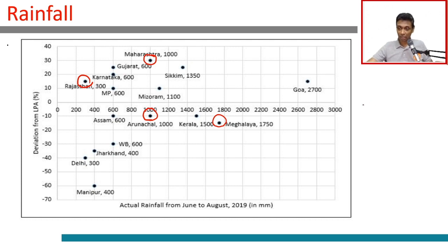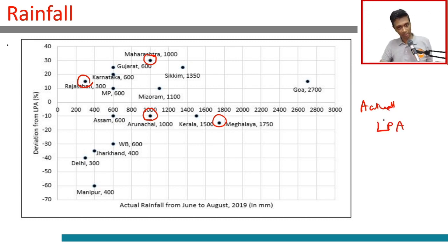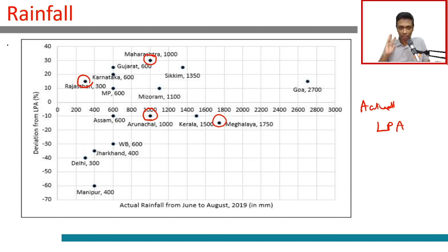From this data we have actual rainfall and deviation vis-à-vis LPA, which means we can find the LPA itself — though calculating all LPAs for all states is not required. We've got the hang of this data: actual rainfall and the deviation amount vis-à-vis LPA — that's all we need.